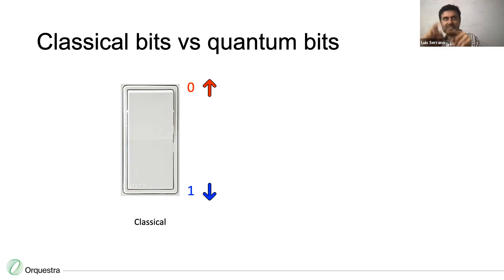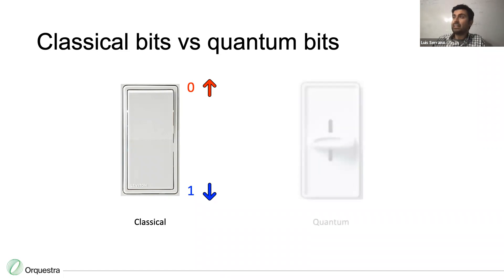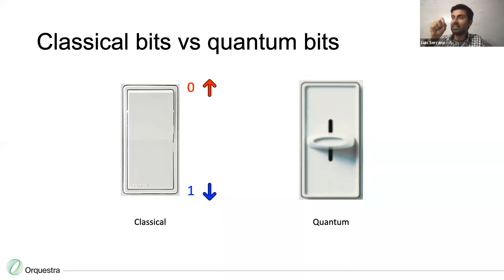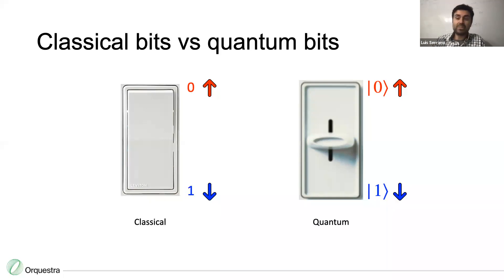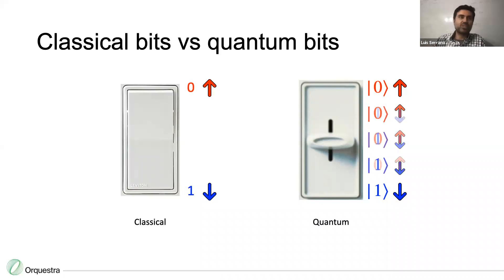A qubit is like a slider. You can have the zero state pointing up and the one state pointing down, but also everything in between — a superposition of on and off. You can have three-quarters zero and one-quarter one, or any combination you want. The notation I'll use is called bra-ket notation. For any point between zero and one, there is a qubit that is some percentage zero and some percentage one.